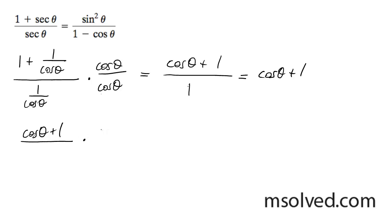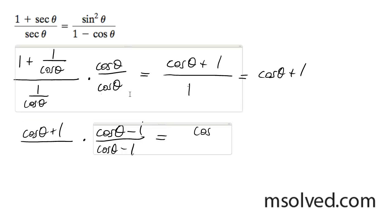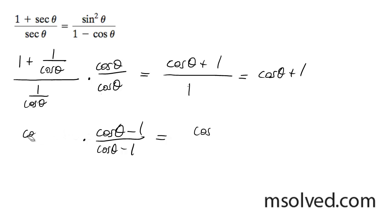We're going to take this times the conjugate, so cosine theta minus 1 over cosine theta minus 1, which is basically 1. Actually, let me redo this here. That's not going to work. Let me erase this. It's the right format, but I've got to redo this.